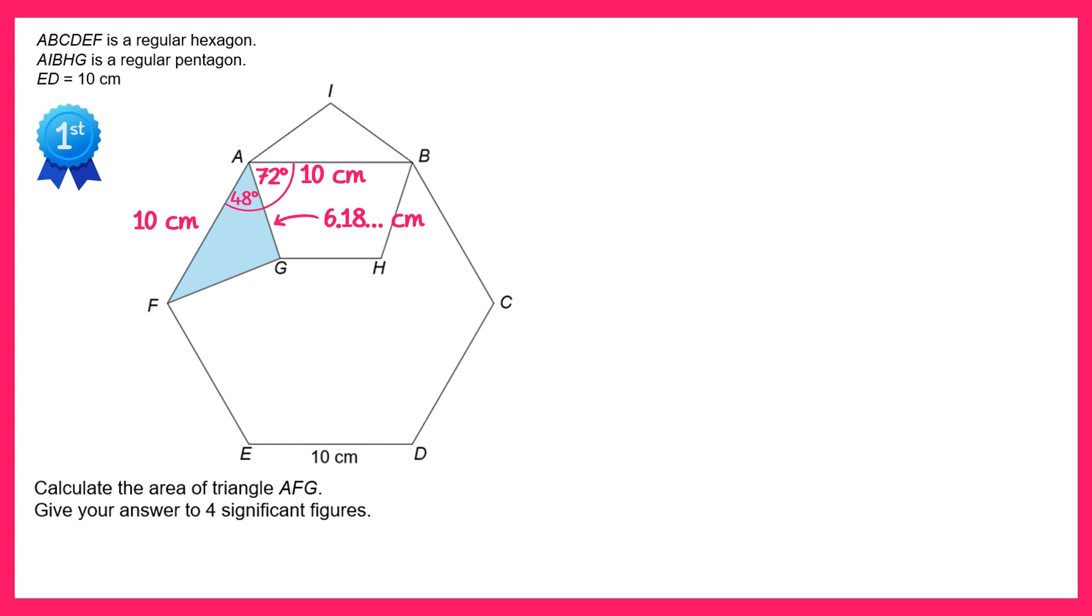Now let's look closely at the triangle we're trying to find the area of, AFG. This triangle here. We know the angle at the top, that's 48 degrees, and we also know both of these sides, 6.18 centimeters and 10 centimeters.